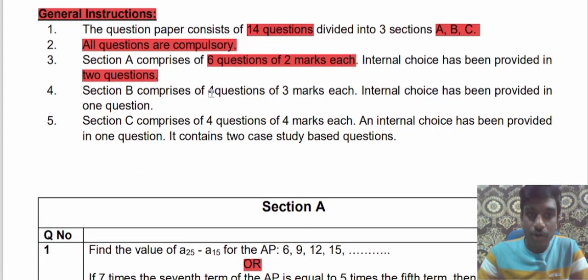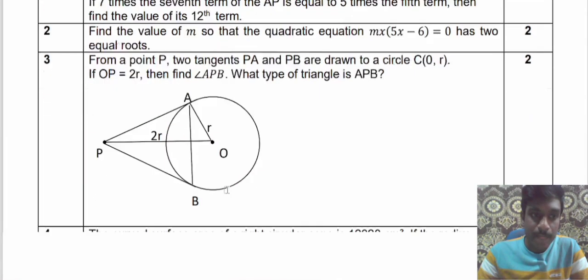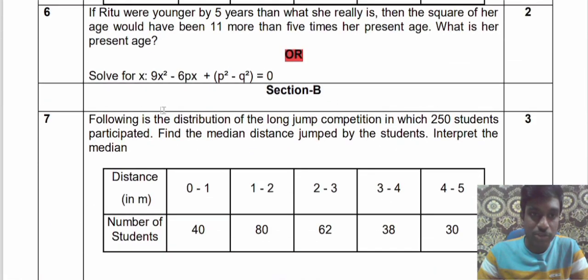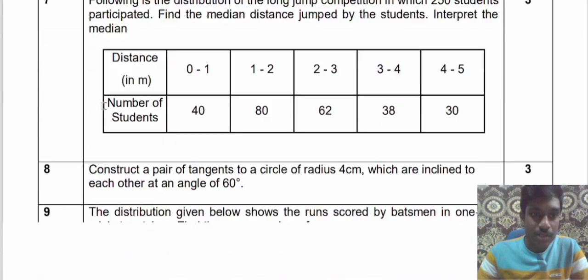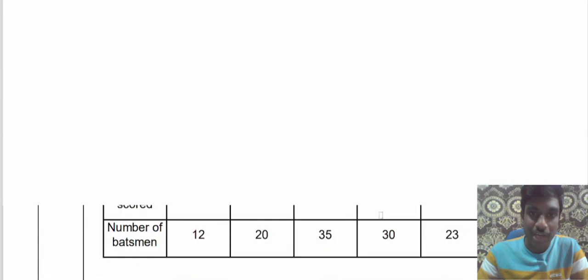In Section B there are 4 questions of 3 marks each and internal choice has been provided in only one question. The questions are numbered 7, 8, 9, and 10. In the 10th question they have given one internal choice — that means either you can answer this question or the other one, any one.